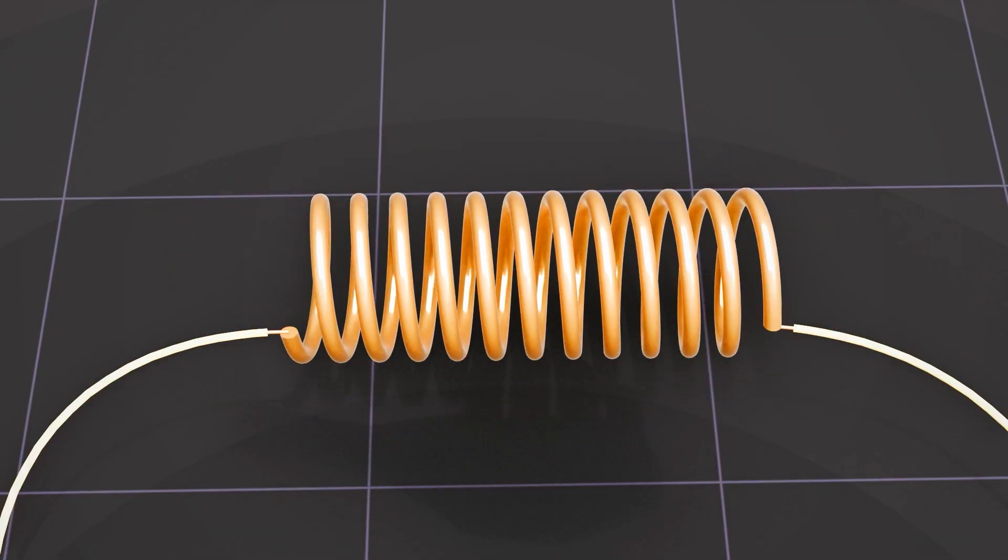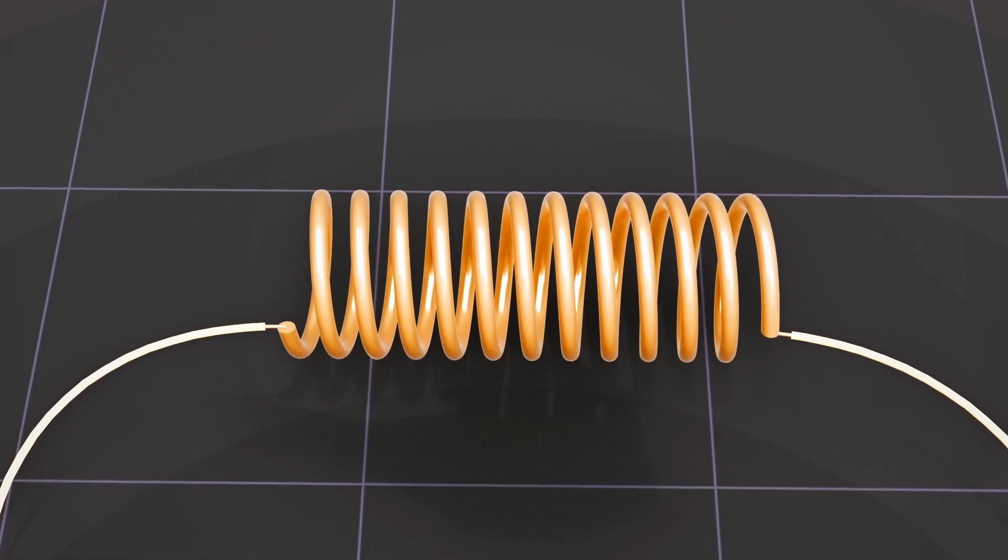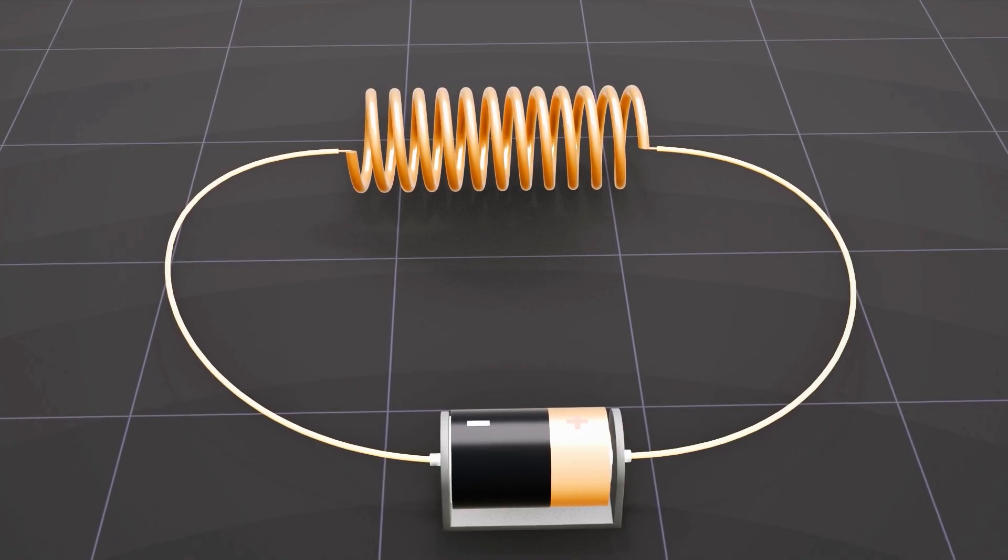When the flow of electricity is stopped, the metallic wire will lose its magnetism and return to a normal state. This is the basic principle of how an electromagnet works.